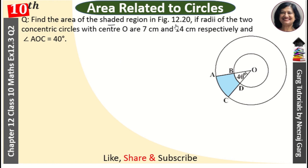Find the area of shaded region in figure 12.20 if the radii of two concentric circles with center O are 7 cm and 14 cm respectively. And angle AOC is equal to 40 degree. Let's remove this area of shaded region and we have both radii given.